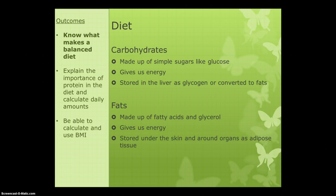We need to know what makes a balanced and healthy diet. It's basically to do with the chemicals that you consume inside your foods, and there are different types of them. The first type is carbohydrates, and they are just made up of simple sugars like glucose, and they give us energy — they are the main source of energy in our diet. If we eat too many carbohydrates, our body converts the glucose into glycogen or fats so that we can store them for later use.